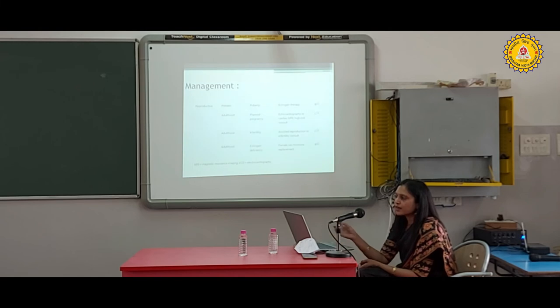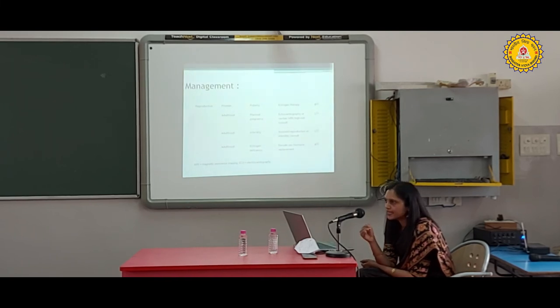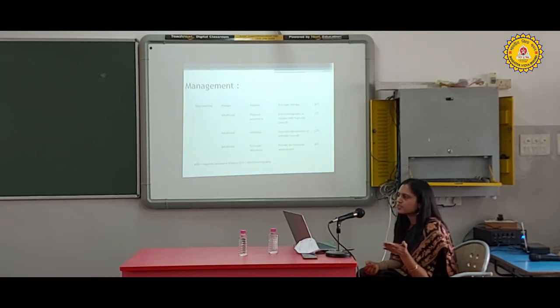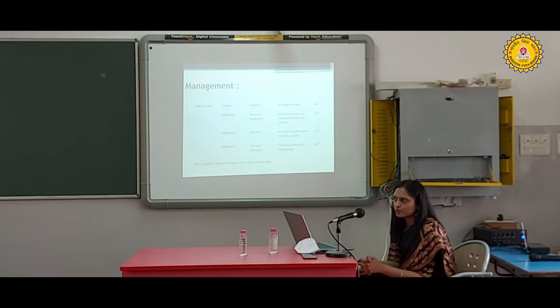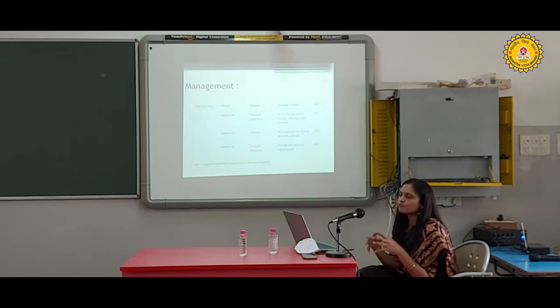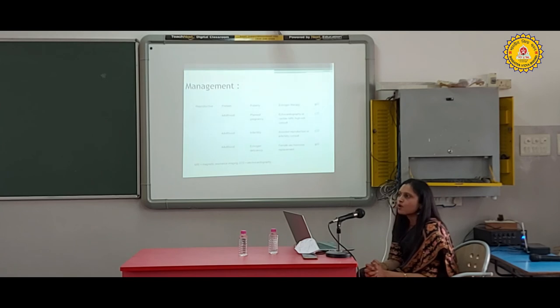For reproductive management, estrogen therapy should be started in preteen years - before 13 years of age - to develop secondary sexual characteristics. This has good evidence. They should continue estrogen therapy throughout life because estrogen works not only for secondary sexual characteristics but also maintains bone density, prevents osteoporosis, and has positive effects on the brain. Estrogen is important for many functions in the female body and should be given to women with Turner syndrome.